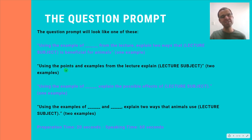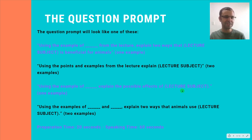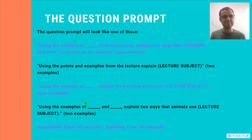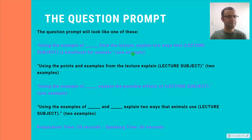Or maybe something like: using the points and examples from the lecture, explain what the subject is. Or: using the example from the lecture, explain the possible effects of the lecture subject. Or: using the examples of such and such from the lecture, explain two ways that animals use whatever the subject of the lecture is. As you can see, you're being asked to summarize the examples and how they illustrate the concept of the lecture. Sometimes the phrasing is a little bit different depending on whether you get one or two examples, but it's pretty much exactly the same.